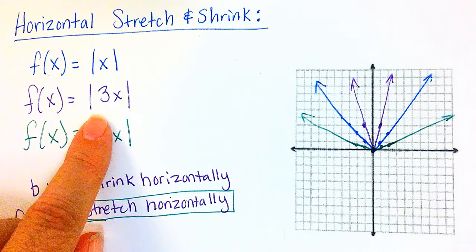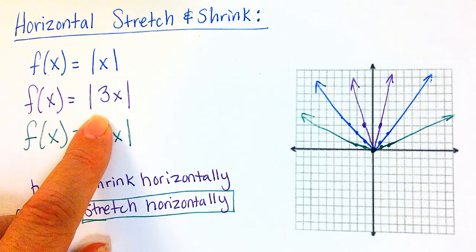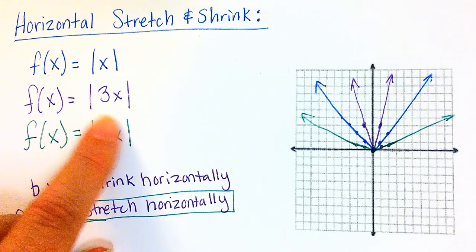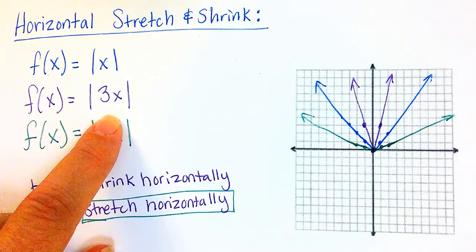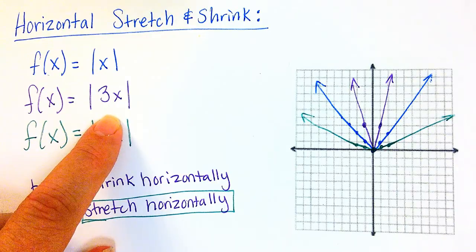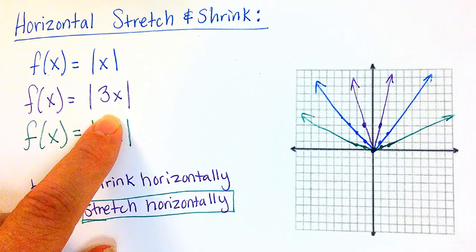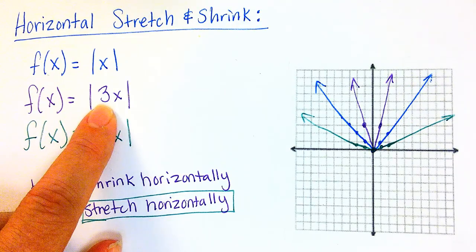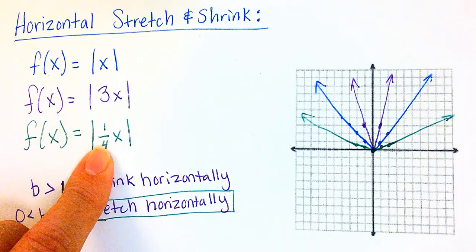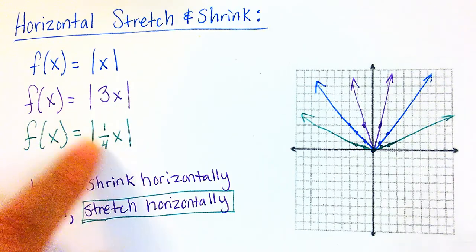So you can think about, I've said this before, if you've seen any of my other videos, but if it's inside, it's the exact opposite of what you would normally do. So if you're thinking about it vertically, think of the opposite to get horizontal. So if it's greater than 1, you're now going to shrink. And if it's in between 0 and 1, we're now stretching because we're doing it in the horizontal direction.